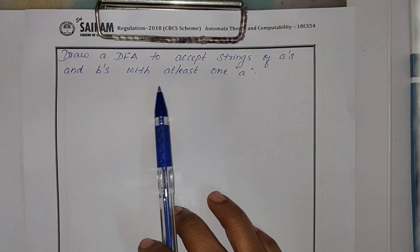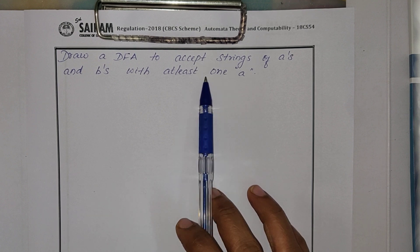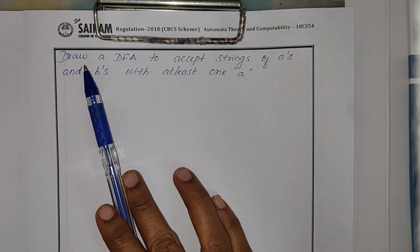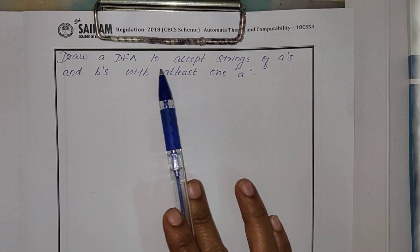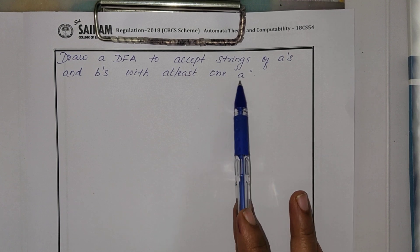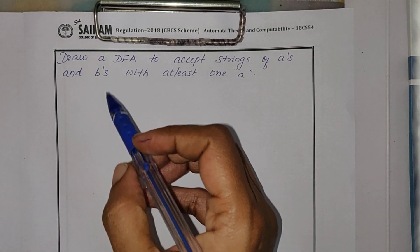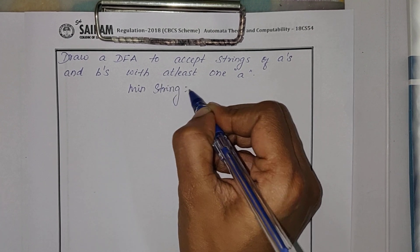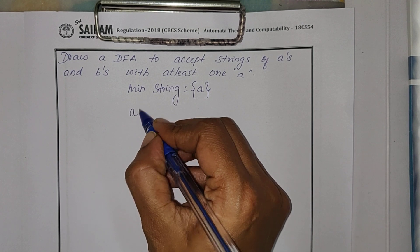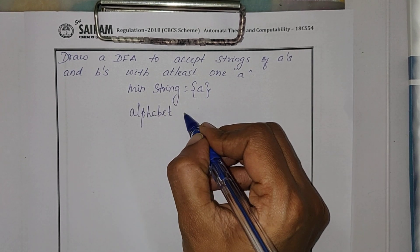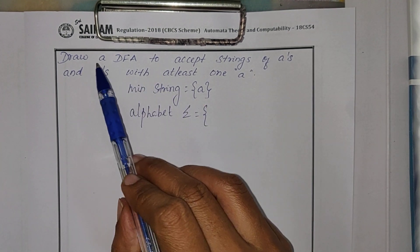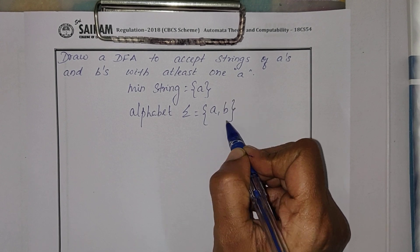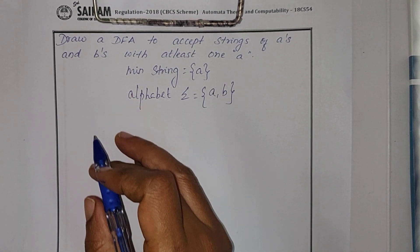To identify the method, read the question. If you have a pattern, it belongs to pattern recognition problems. We'll check whether there is a pattern in this question: draw a DFA to accept strings of A's and B's with at least one A. There is a pattern, so it belongs to pattern recognition method. The minimum string is my pattern. My sigma — the alphabet — is A comma B, since the question says strings of A's and B's.